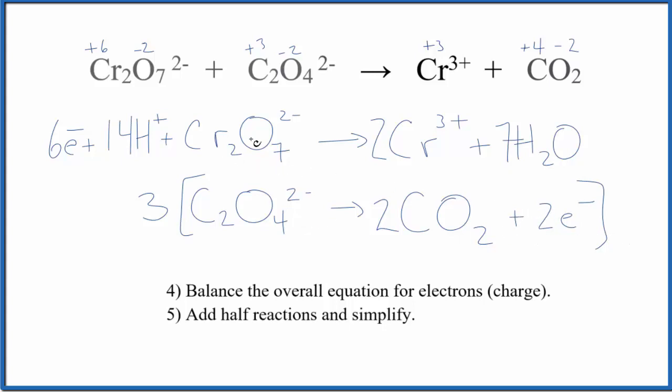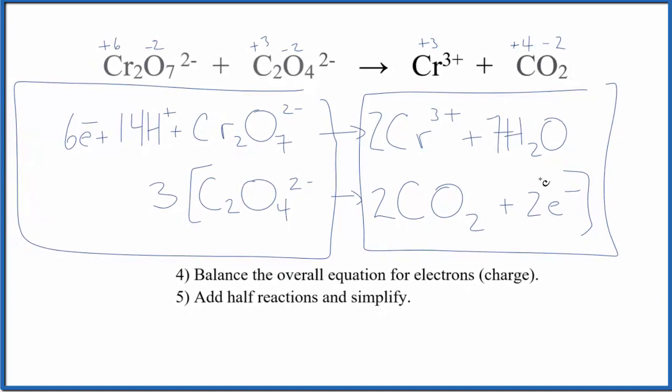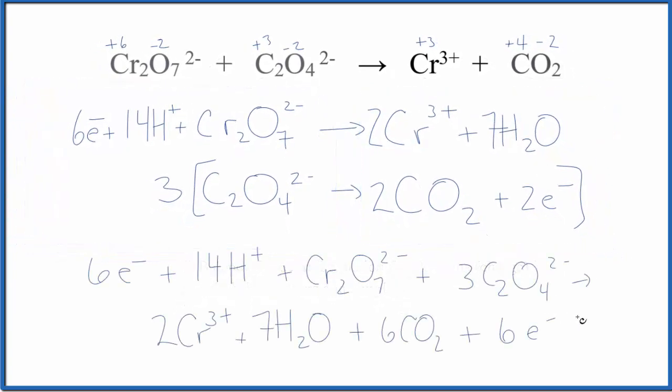I'm going to multiply three times everything, then put all of this in the reactants and all of this in the products. Once we have this, we simplify - six electrons on both sides, we can take that out. That's the only thing that's the same on both sides.